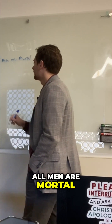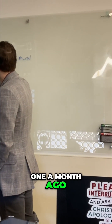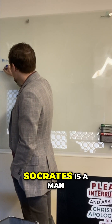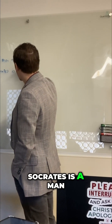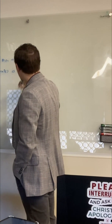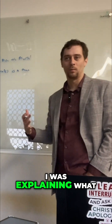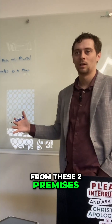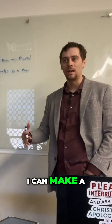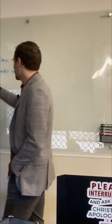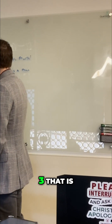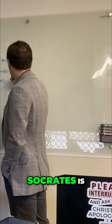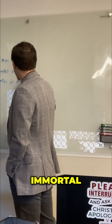All men are mortal — we've talked about this one a month ago. All men are mortal. Socrates is a man. And what we talked about a month ago, I was explaining what a syllogism is — we deduce the conclusion from these two premises. But rather than that, I can make a set of premises that are contradictory, by having a premise three that is: Socrates is immortal.